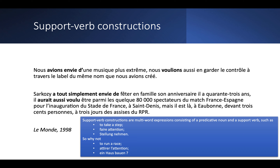What are support verb constructions generally speaking? You have avoir envie in the examples, and at the bottom in the box there are a couple more. Generally speaking, they are constructions that consist of a support verb and a predicative noun — they are verb-noun predicative direct object multi-word expressions.